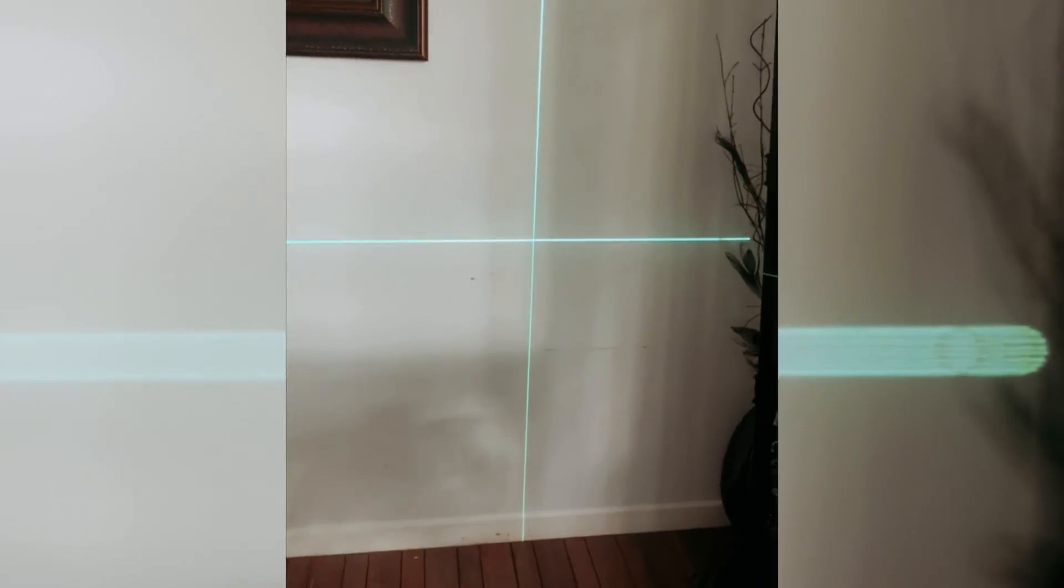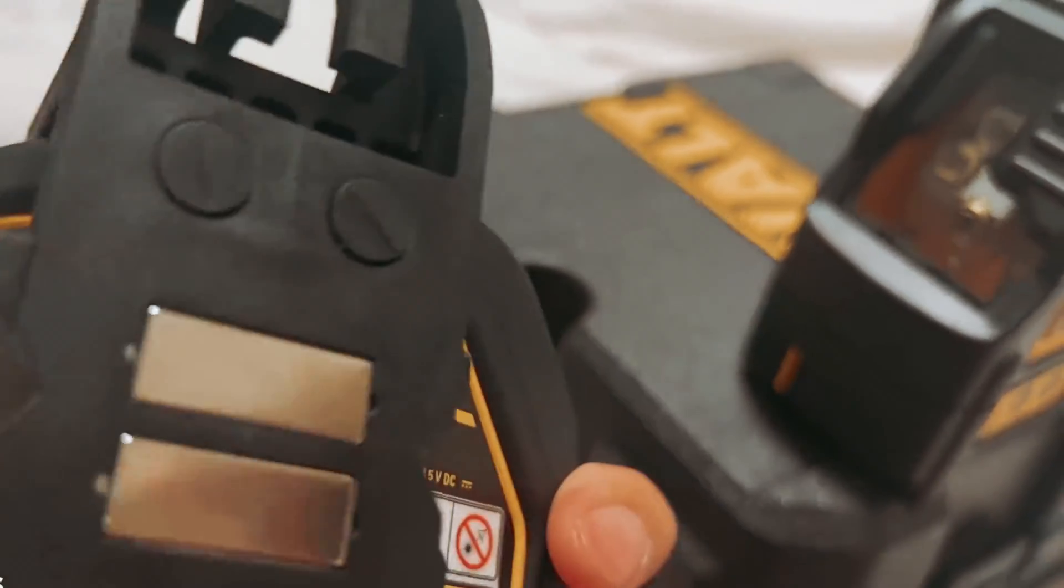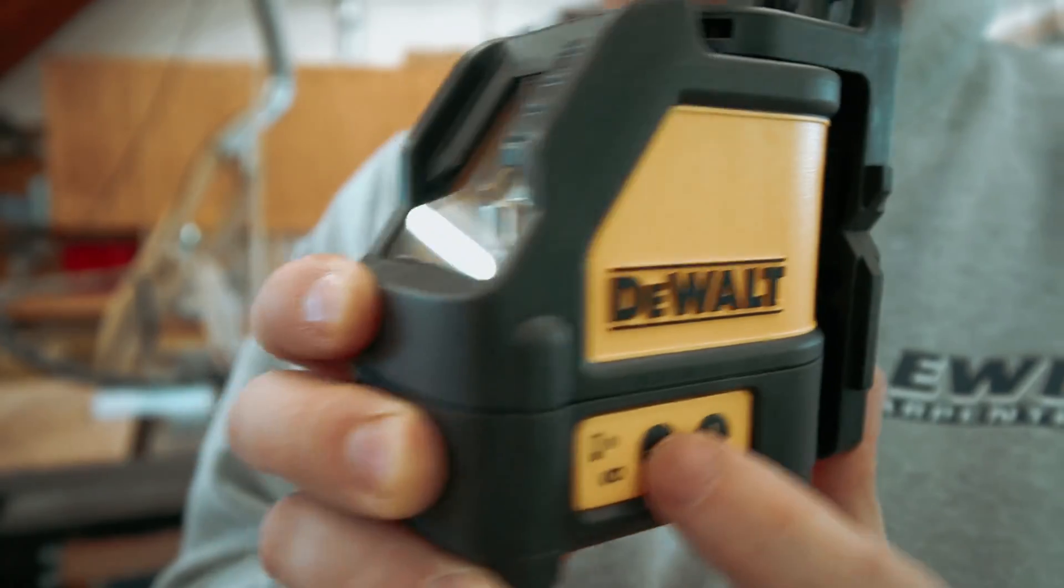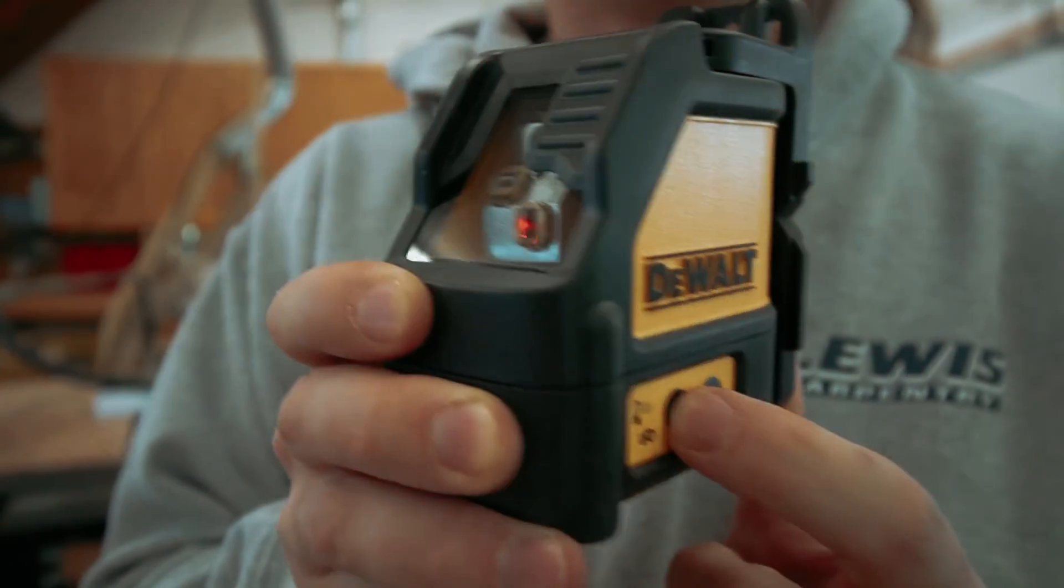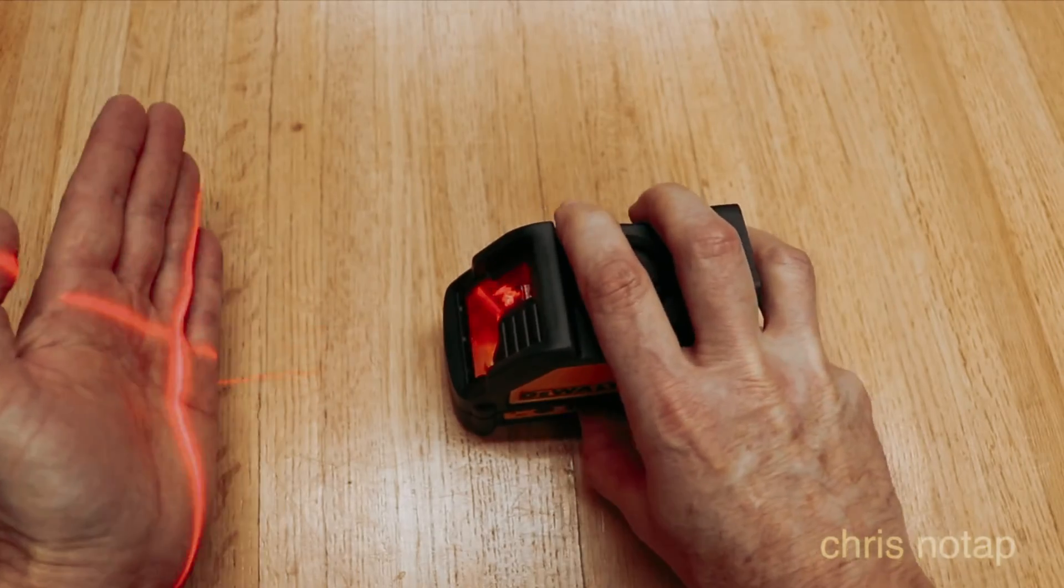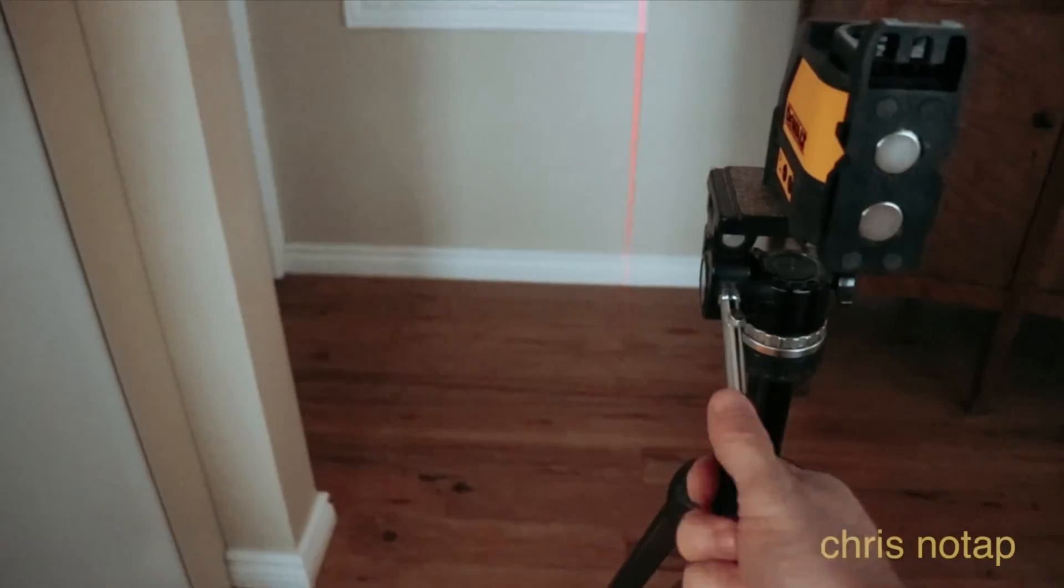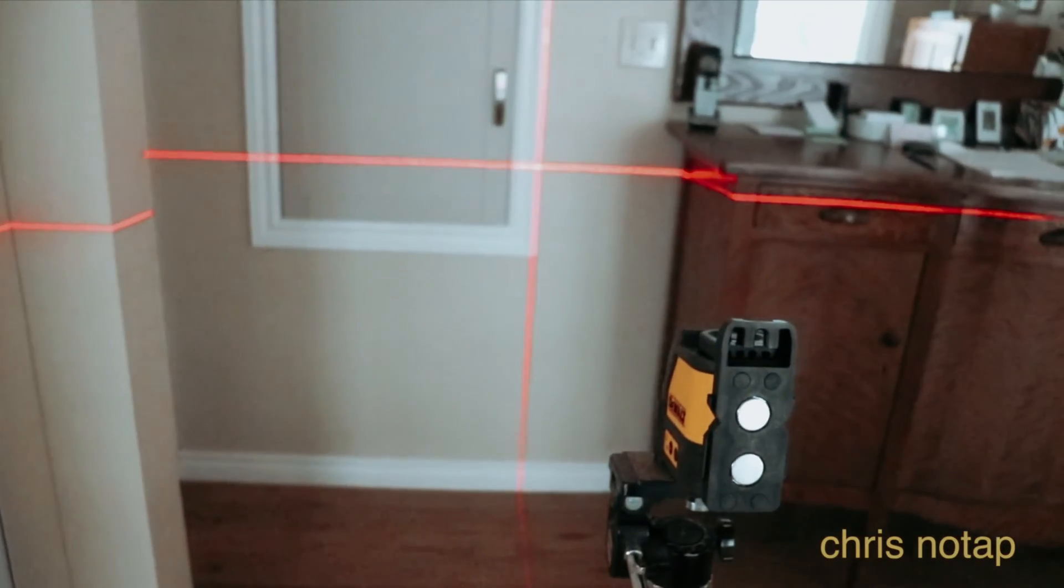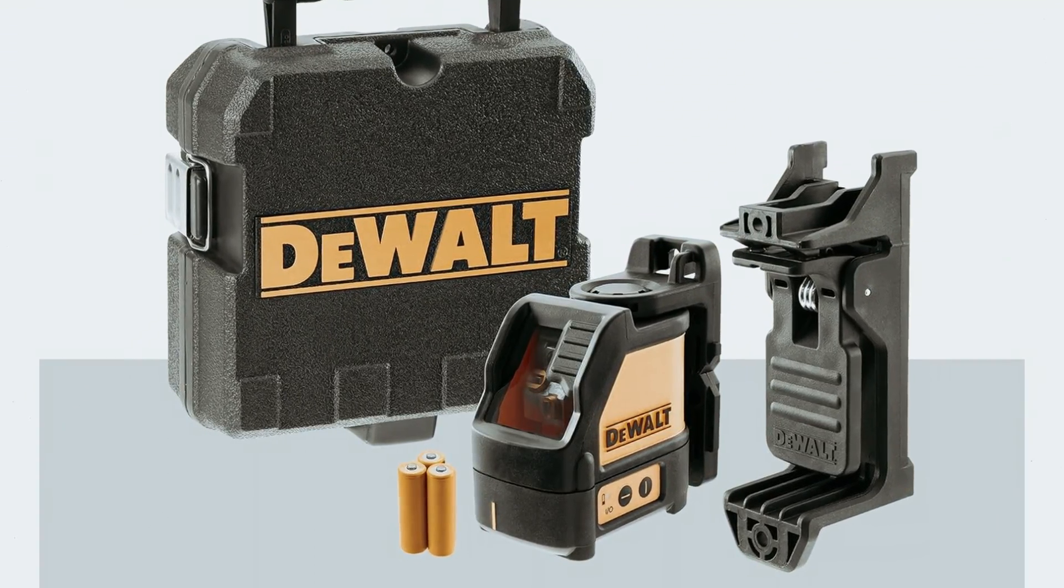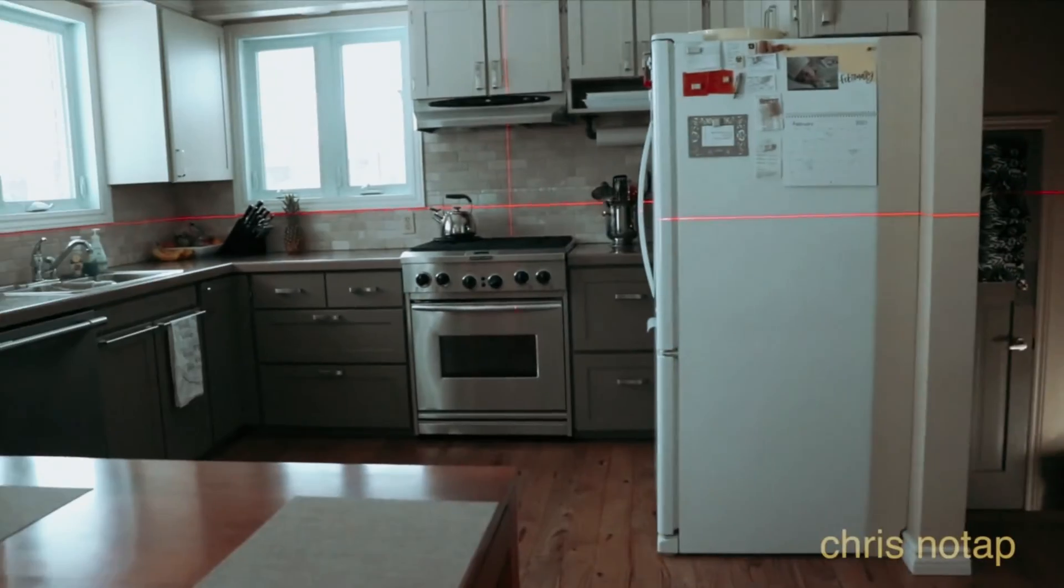One of the standout features of this DEWALT LINE Laser Level is the patented Integrated Magnetic Bracket, which provides secure mounting options for easy positioning on various surfaces. Additionally, this self-leveling laser level is water and debris resistant with an IP54 rating, ensuring reliable performance even in challenging environments. With a range of up to 165 feet when used with a detector, the DEWALT LINE Laser offers great flexibility for a wide range of applications.